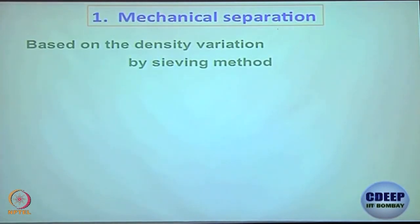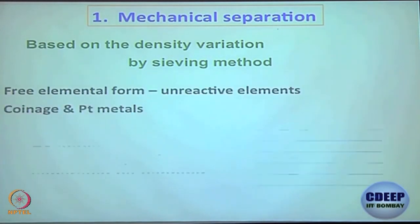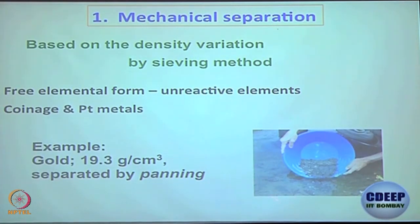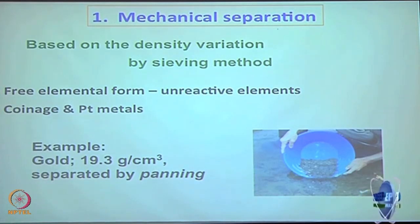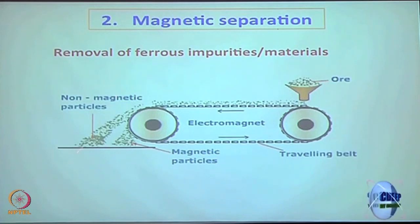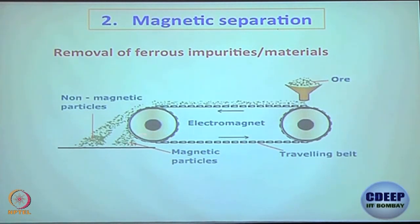The easiest technique is mechanical separation — you just decant or wash it off. For example, you wash with a solvent, usually water, and unwanted material goes off or the important material comes out. Another technique is electromagnetic separation: you pass the ore through an electromagnetic separator. Depending on the nature of the materials, the magnetic materials will be isolated or separated from the non-magnetic materials. These are very easy techniques to understand.